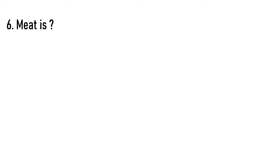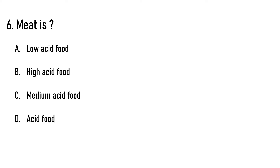Next question: Meat is what type of food? Options are: A) low acid food, B) high acid food, C) medium acid food, D) acid food. The correct answer is that meat is a low acid food. Give two examples each of high acid food, medium acid food, and acid food in the comment box.